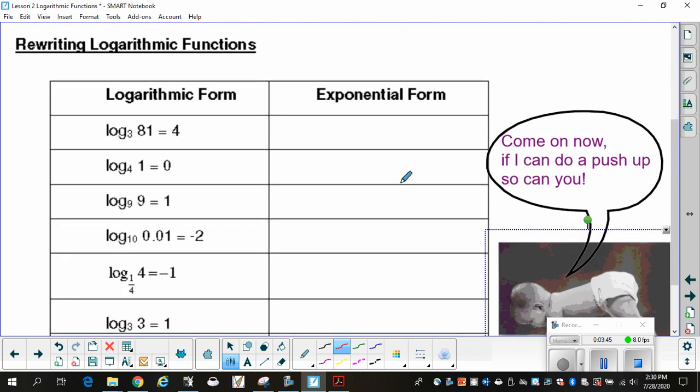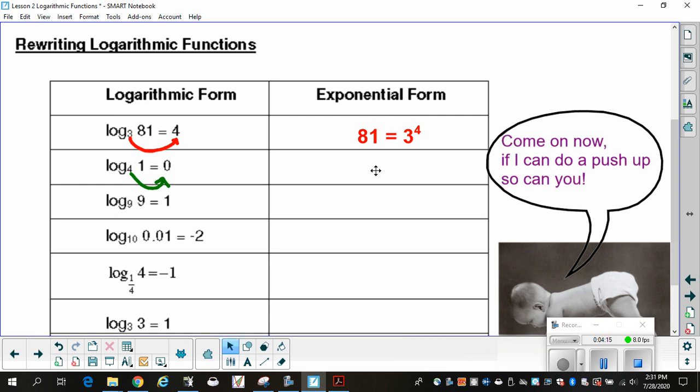So, we want to rewrite log base 3 of 81 equals 4. This is an expression or an equation that's actually solved. But what I'm going to do is I'm going to take the 3 and it's going to come over here. And it's going to push the 4 up. So, you wind up with 81 is equal to 3 to the 4th. Again, our 4 is going to run underneath and push the 0 up. And so, you wind up with 1 equals 4 to the 0. Remember, log base 4. So, 4 is the base. That should immediately tell you which one is the base.